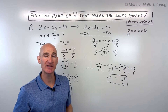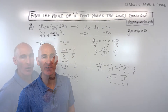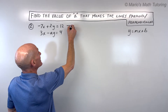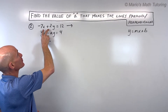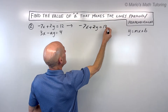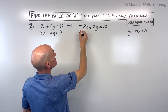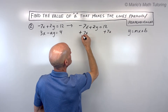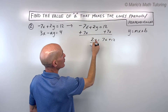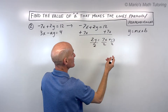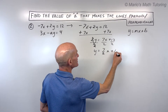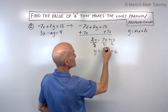Let's try another example — see if you can do it on your own before we go through it together. First step: rearrange the equations to solve for y to find the slope. These are in standard form with variables on the left and numbers on the right. Taking the first equation, we add 7x to both sides to get 2y = 7x + 12, then divide by 2: y = (7/2)x + 6. So the slope is 7/2.